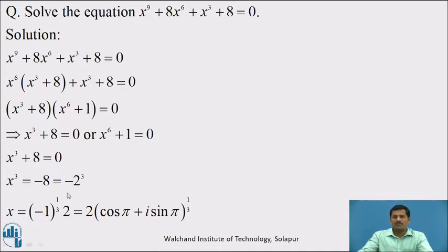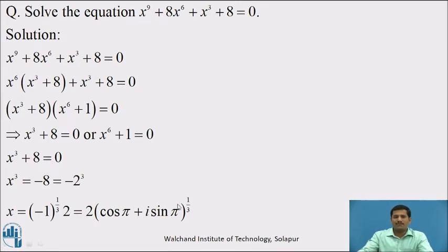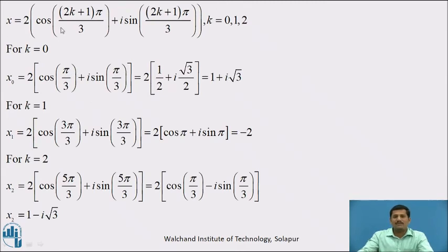Considering x³ + 8 = 0: taking 8 to the right side gives x³ equal to minus 8, written as minus 1 times 2³. Taking cube roots on both sides, x equals 2 times (−1)^(1/3). Writing minus 1 in polar form as cos π plus i sin π raised to the power 1/3, the formula for the cube roots is x equal to 2 times cos((2k+1)π/3) plus i sin((2k+1)π/3), where k equal to 0, 1, 2.